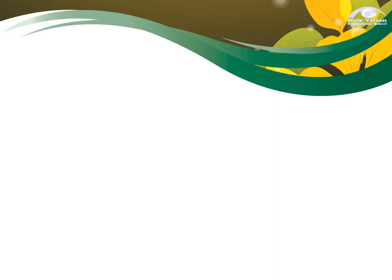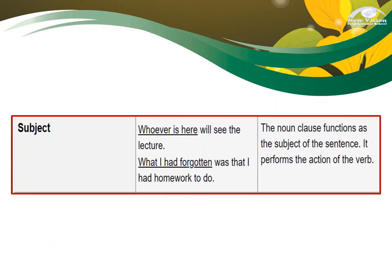We have four uses of your Noun Clause. The first one is that it is used as a subject. Examples: 'Whoever is here will see the lecture.' And 'What I had forgotten was that I had homework to do.' Notice that the Noun Clause can be found at the beginning of the sentence. It functions as the subject of the sentence — it performs the action of the verb.